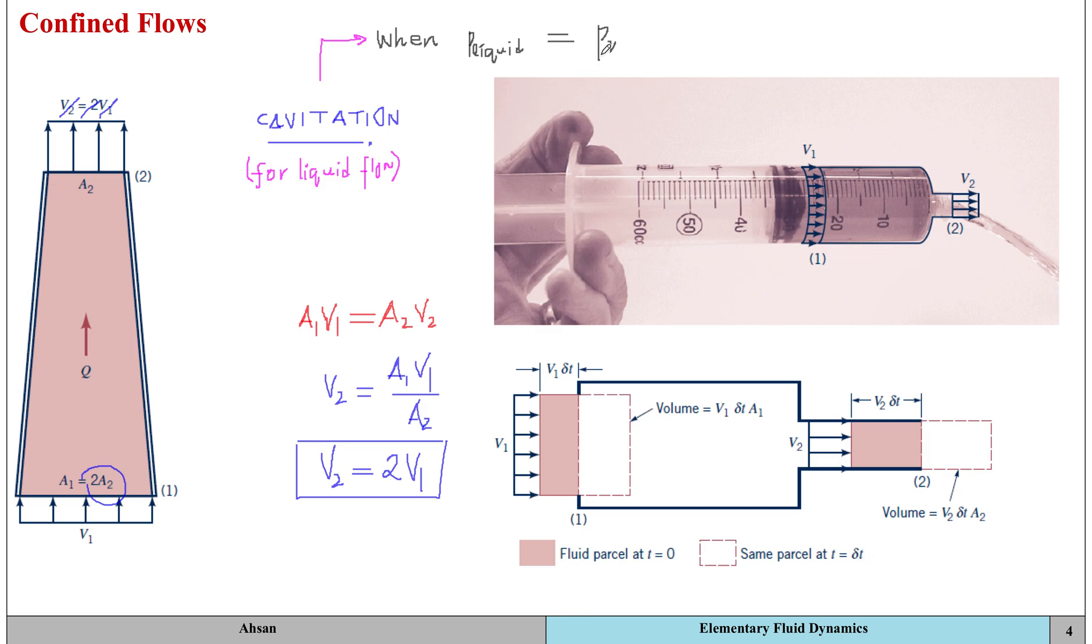The vapor pressure, represented by p subscript v, is the pressure at which vapor bubbles start forming in the liquid, meaning it's the pressure at which the liquid starts boiling.